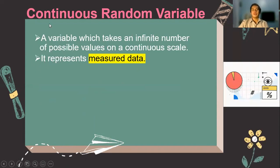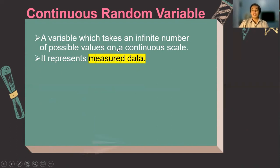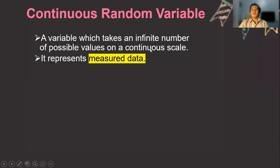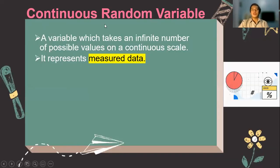What about for a continuous random variable? So a continuous variable is a variable which takes an infinite number of possible values on a continuous scale. You can also easily recognize it because it is measured data.